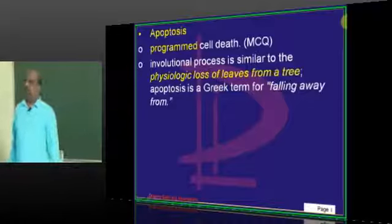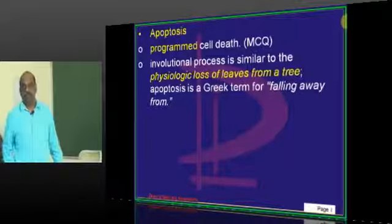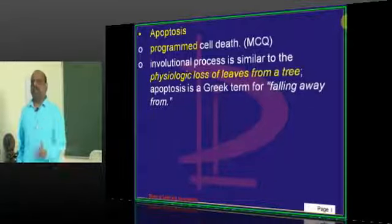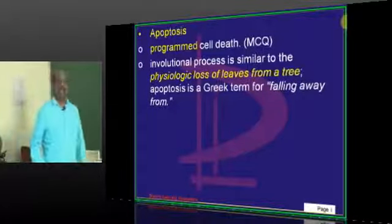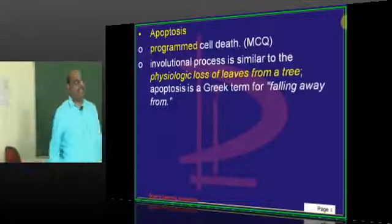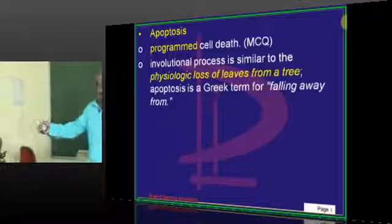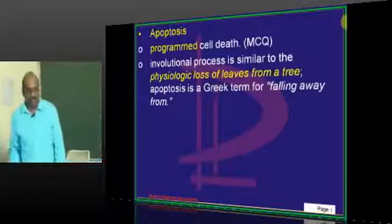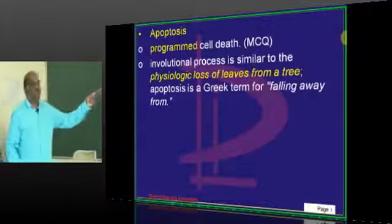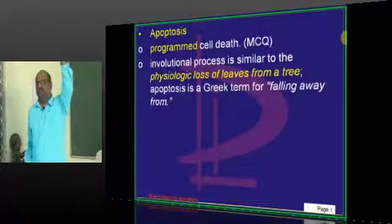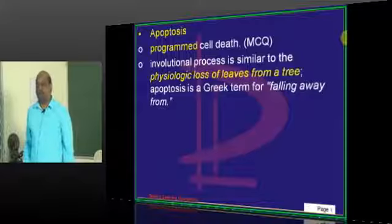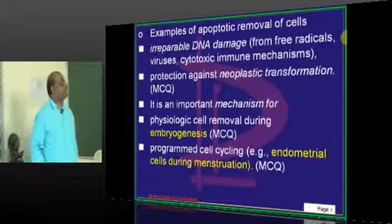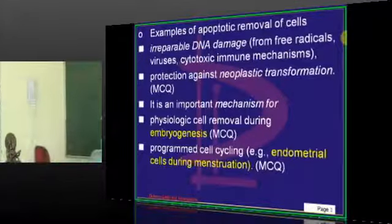Apoptosis is the programmed cell death. A lot of processes are dependent on apoptosis. In Greek it means the falling of the leaves of the tree. The way the leaves silently fall down without making much noise — like necrosis — apoptosis is also responsible for cell shedding, is what needs to be remembered.